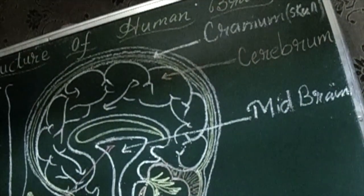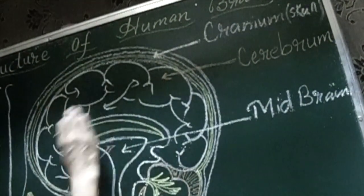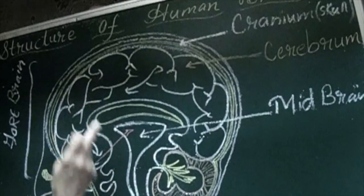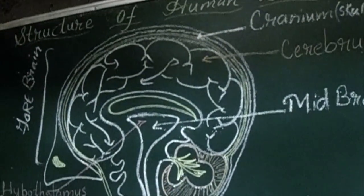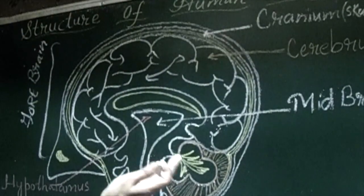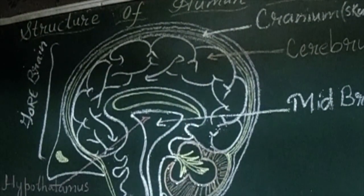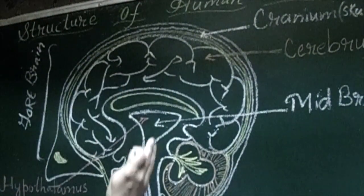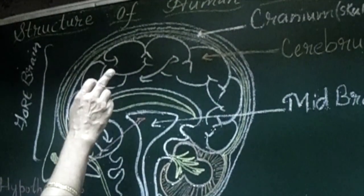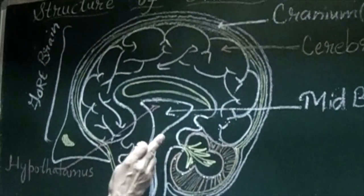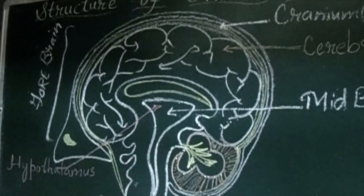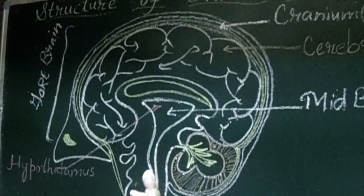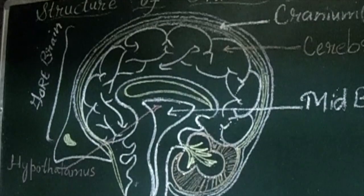It serves as relay station between forebrain and hindbrain. The information is stimulated with the help of midbrain. If the messages or impulses have to be sent to the forebrain then they have to pass through the midbrain. If any information comes from the cerebrum it has to pass through the midbrain. So midbrain is the center for stimulation of messages.